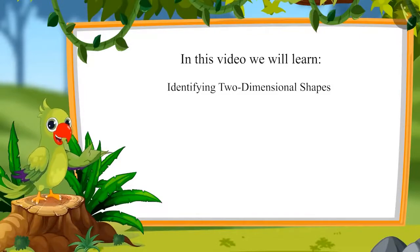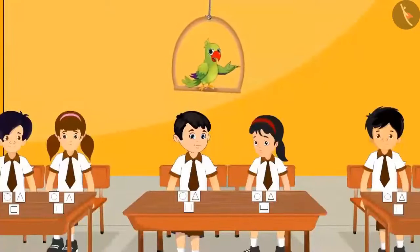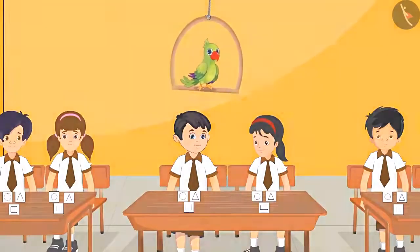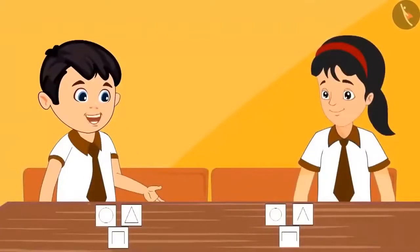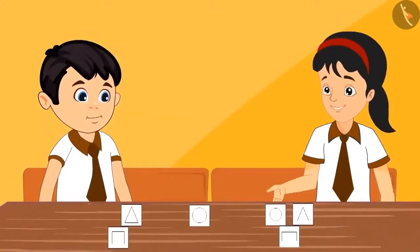Identifying two-dimensional shapes. Today in Chotu's class, the teacher gave cards of two-dimensional shapes to everyone and they were asked to sort those cards. Pinky said, 'Chotu, look here — there is a circle on this card, we should keep it separately.' Chotu replied, 'I also have a card with a circle — we can keep these two together.' They identified shapes made of four lines and kept them aside, and then shapes made of three lines.